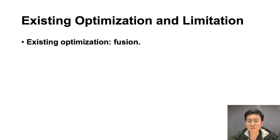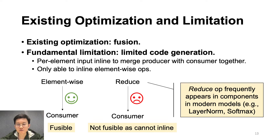The most important optimization for memory-intensive computations is kernel fusion. By fusing many small ops together, non-computation overhead like kernel scheduling and kernel launching is saved, and off-chip memory traffic is reduced. However, existing compilers are not able to fuse complex computing graphs together. For example, reduce ops, which frequently appear in components like layer norm, softmax, and many others, cannot be fused with their consumers. The fundamental reason is that existing compilers like TVM and XLA use per-element input inline to merge producer with consumer together. It is not sufficient to inline the per-result of reduce to its consumer's every input, because it will introduce unacceptable redundant computations.